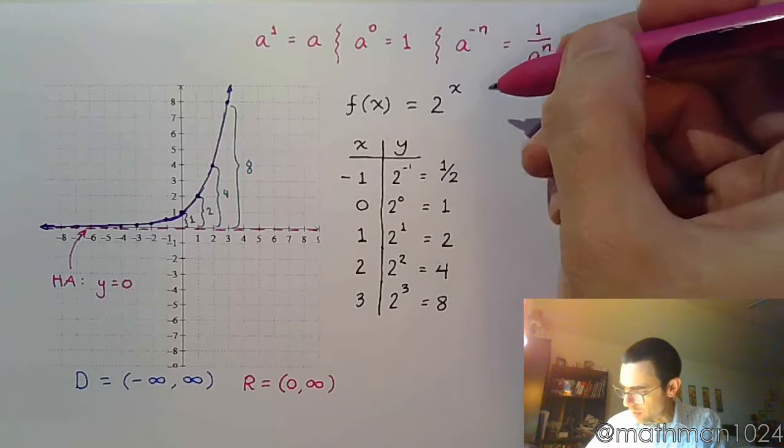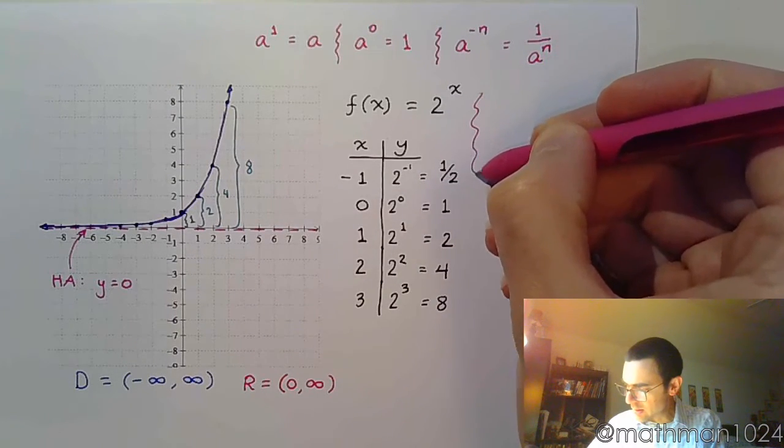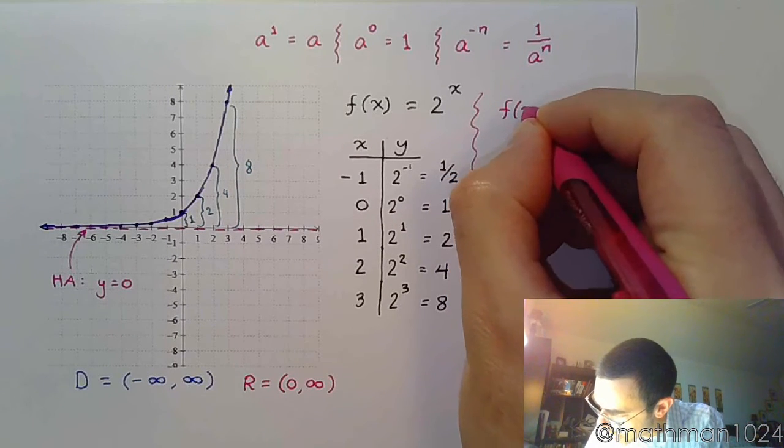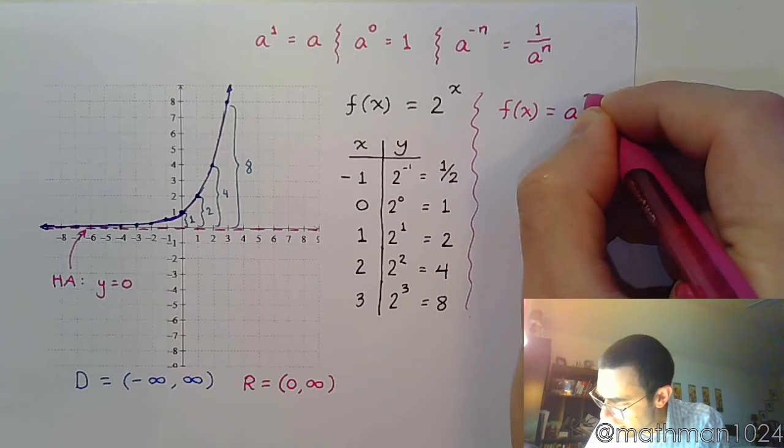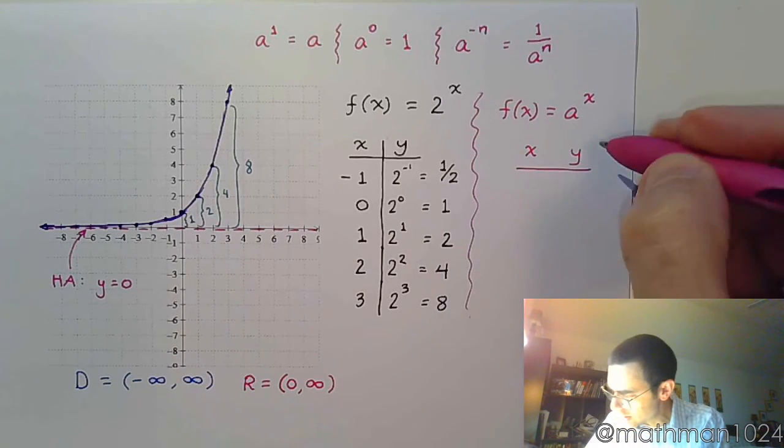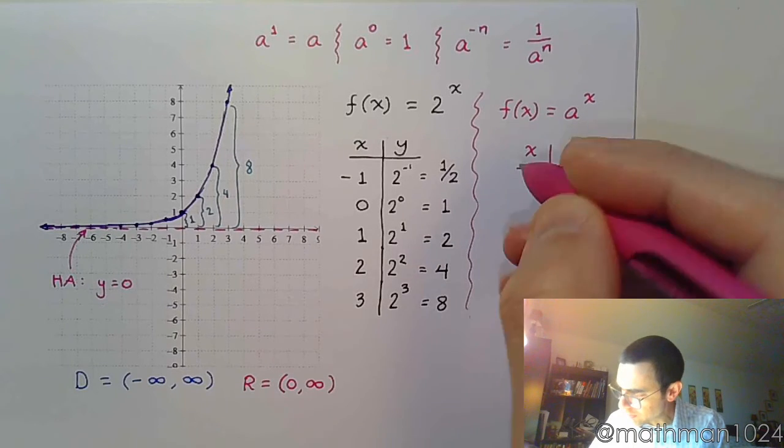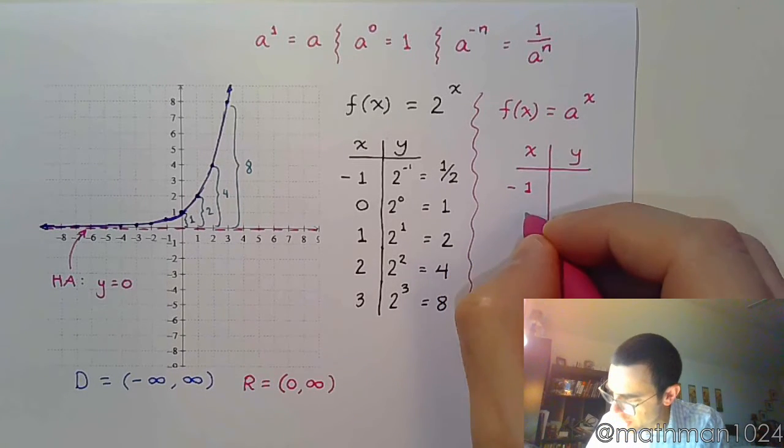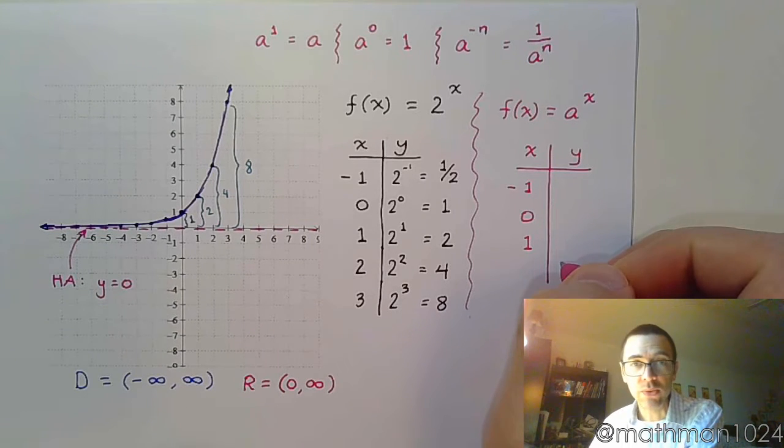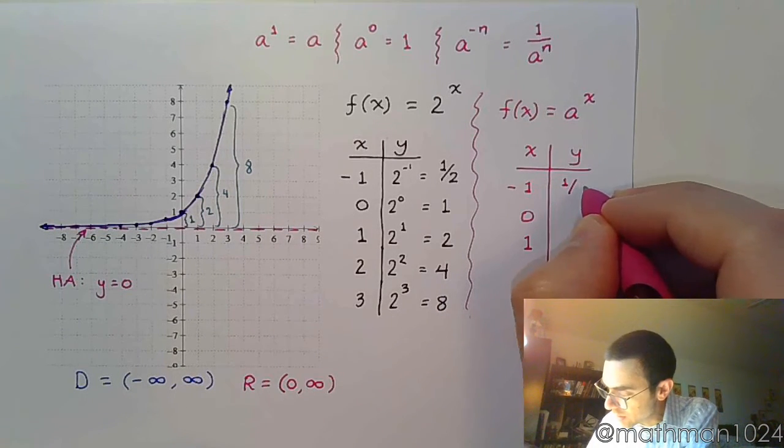So just in general, I'm going to put this over here to the side. When you have a function a^x, your key points will revolve around -1, 0, and 1. And as we've seen above, we know that this is going to give us the reciprocal of the base, so 1/a.